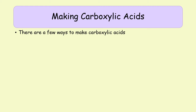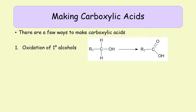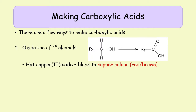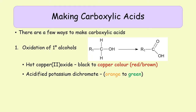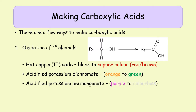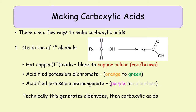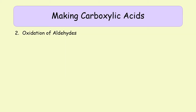Carboxylic acids can be made in quite a few different ways, which makes them one of the most versatile functional groups to make. The first way is oxidation of primary alcohols. This process goes through an aldehyde first, which then converts into the carboxylic acid — so it's two oxidation steps. You can use hot copper oxide (black to coppery red-brown), acidified potassium dichromate (orange to green), or acidified potassium permanganate (purple to colorless).